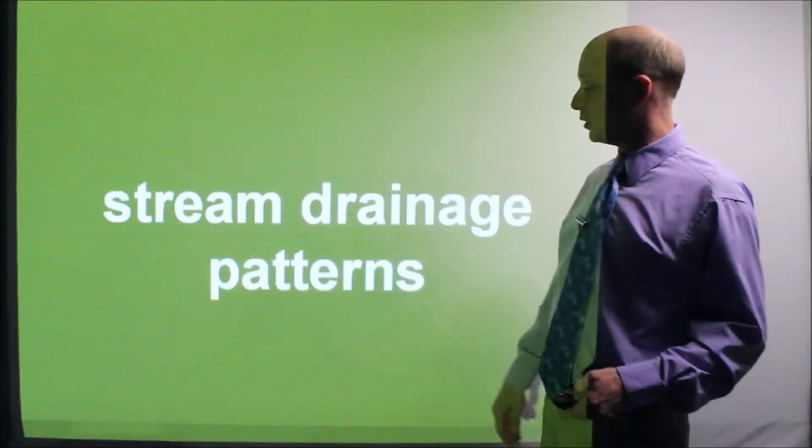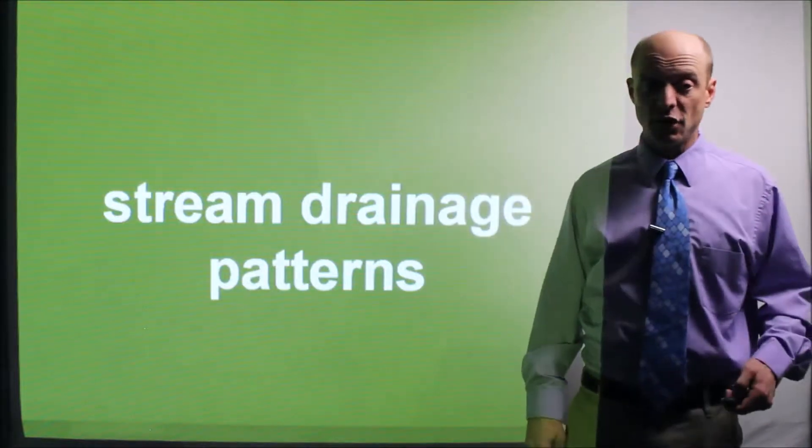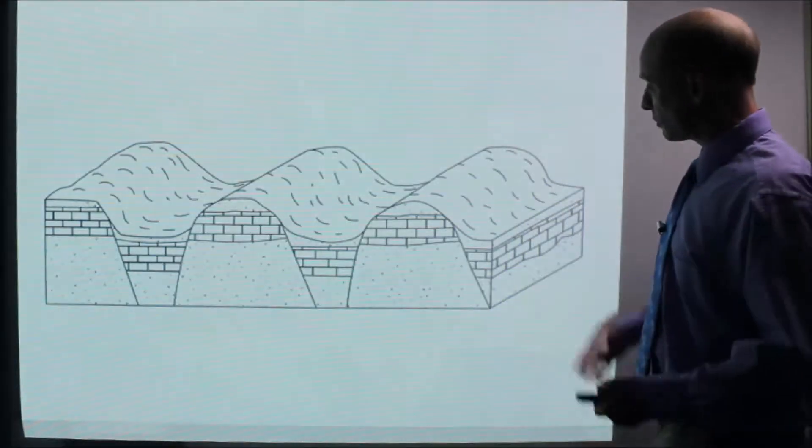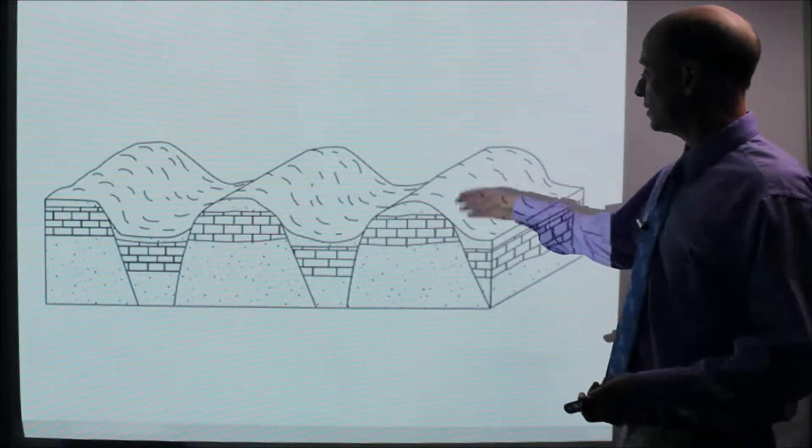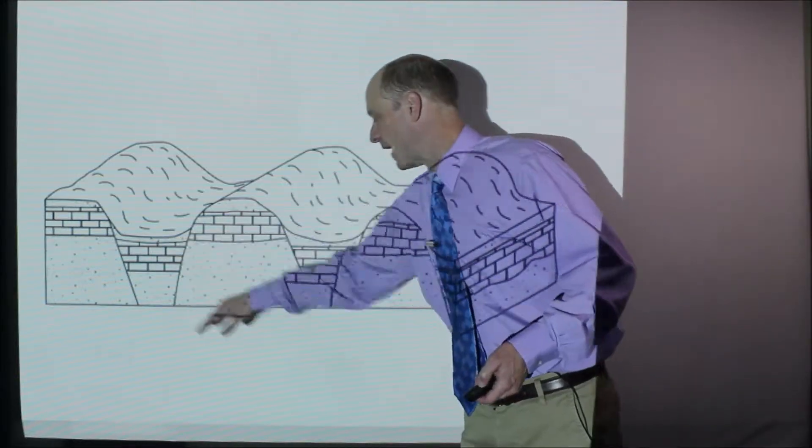Landscapes. That's the first part we're going to do - stream drainage patterns. So let's say this is a cross-section of the land you see, sort of elongated hills here and the valleys in between.